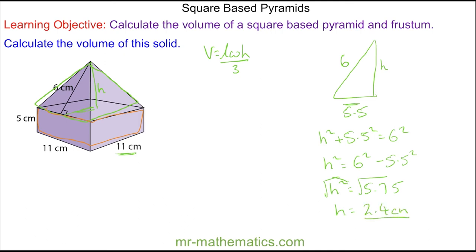So the volume of our pyramid is the length times the width — 11 centimeters squared — multiplied by the perpendicular height of 2.4, divided by three. Putting this into a calculator, we get approximately 96.7 centimeters cubed.